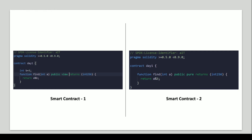Smart contract two is the optimized smart contract, while smart contract one is not. Smart contract one will consume much more gas — much more money — because it declares an extra variable b, which is not needed. You can use the literal value three directly. By declaring one extra variable you are adding an extra line of code, and since you pay for every single line of code, smart contract one will consume much more gas.